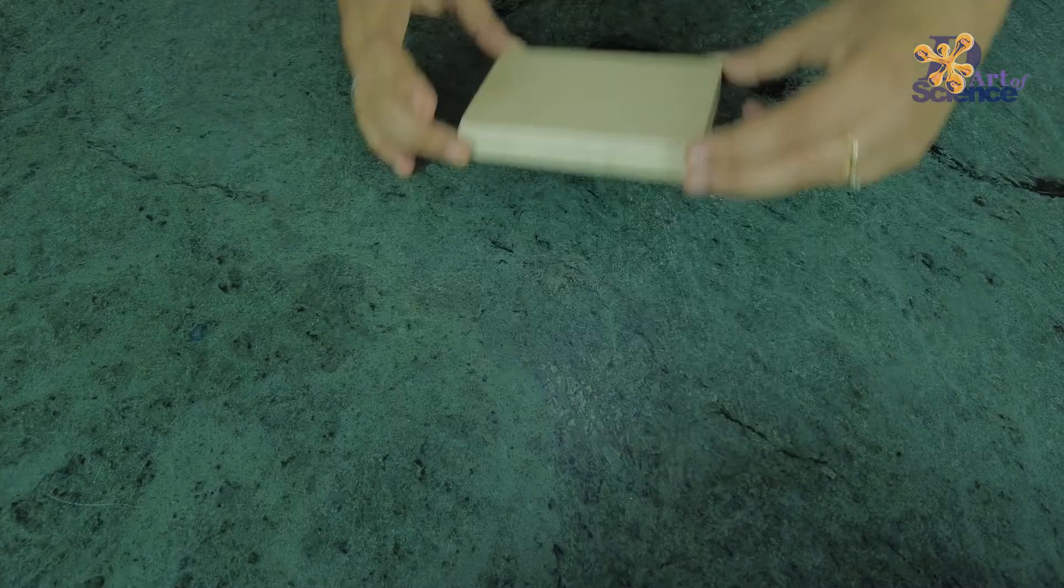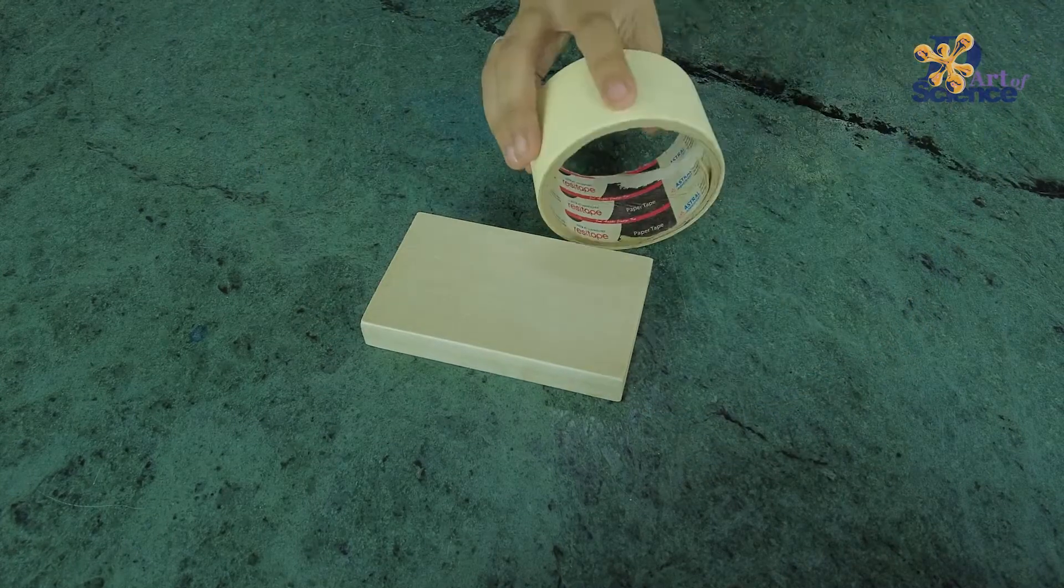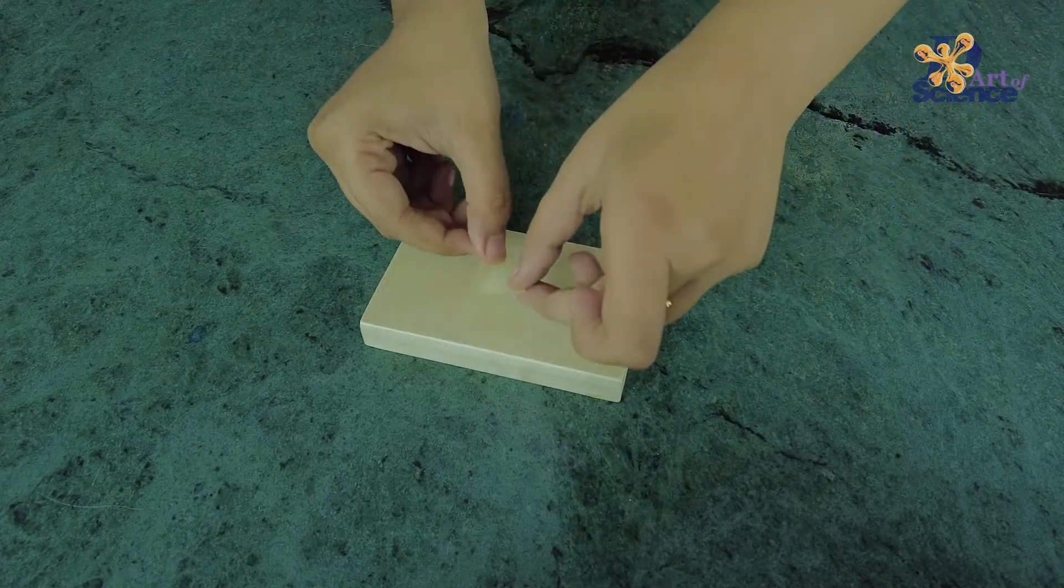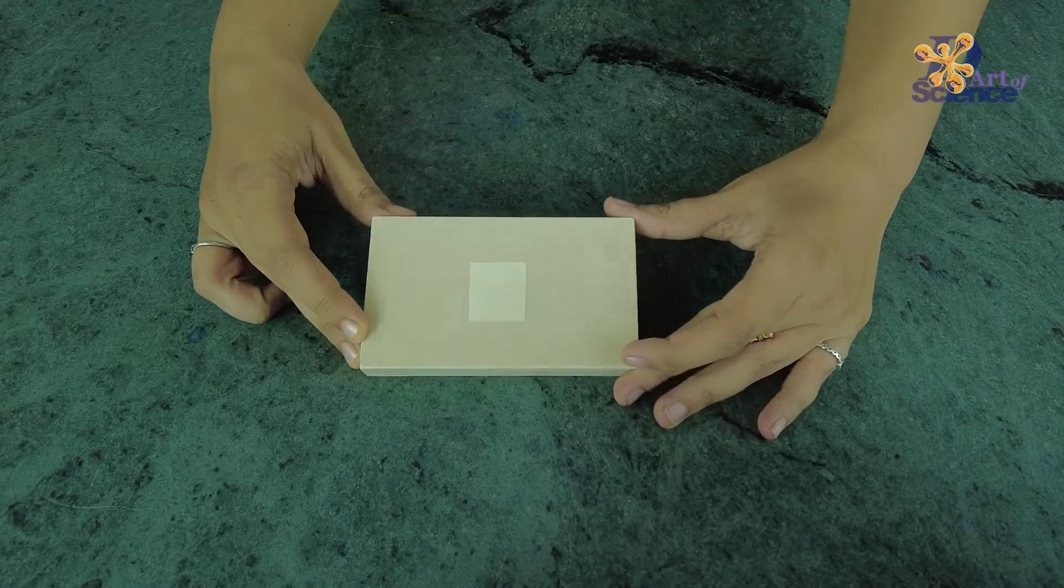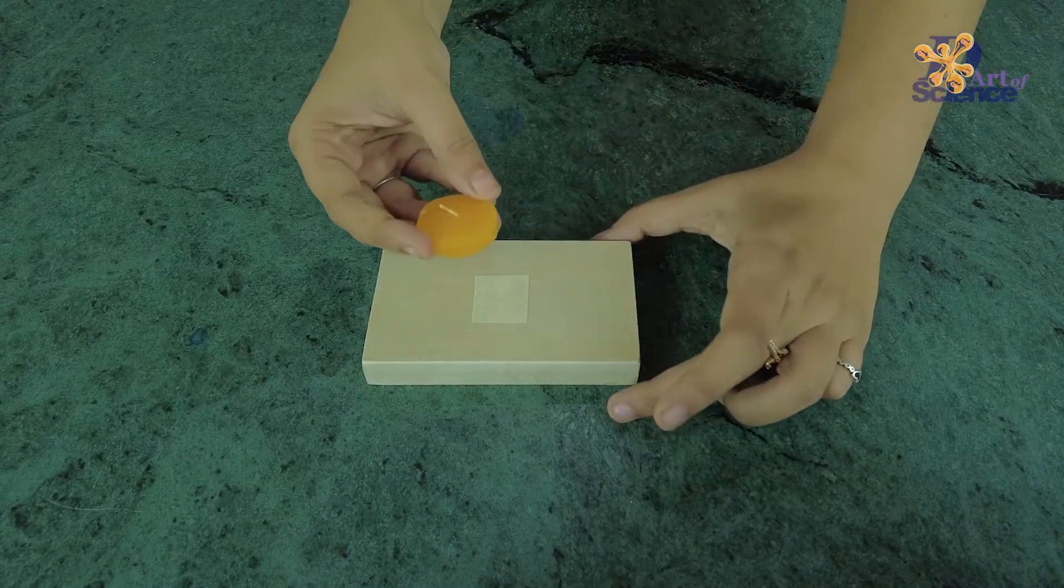Let's see how to do this. Take a block of wood or any other clean surface. Use a broad masking tape and cut out any shape you like and stick it. Next, take a candle and rub it on the surface.